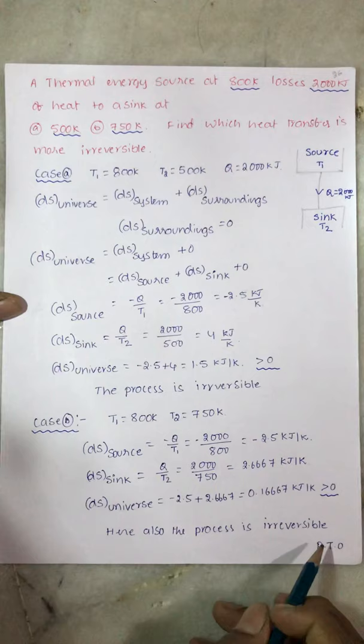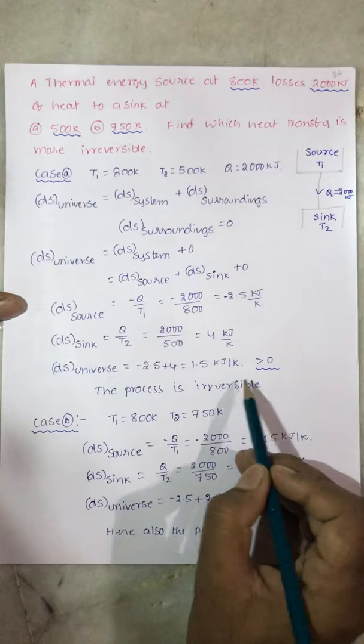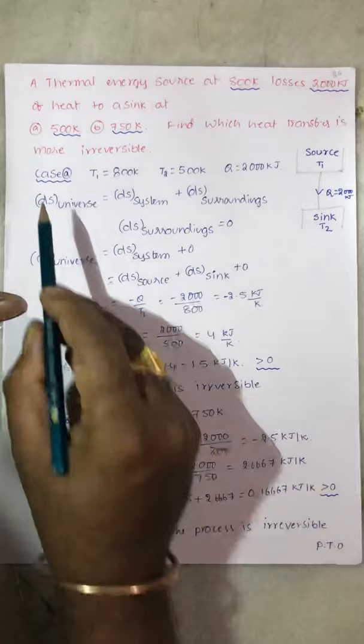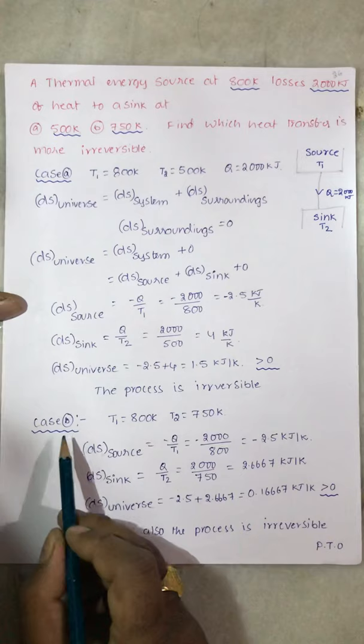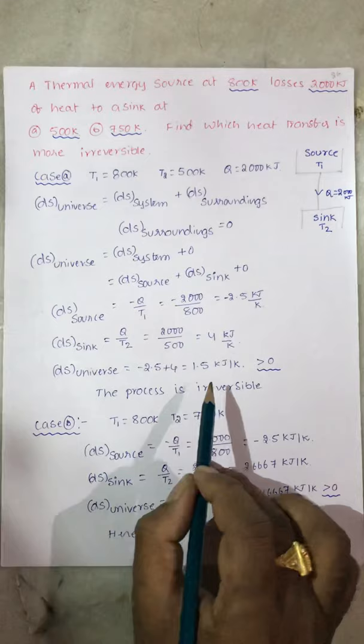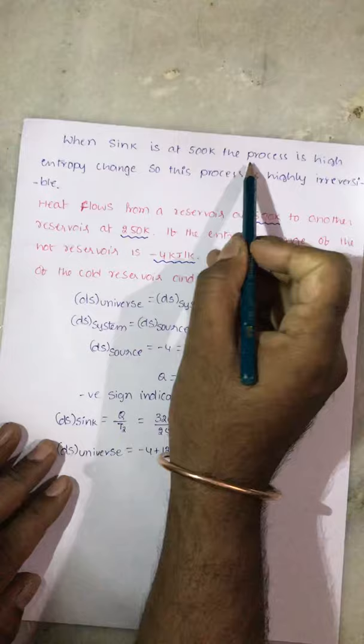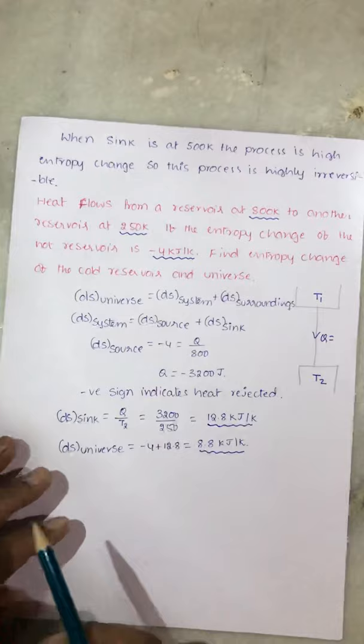Both processes are irreversible, but which is more irreversible? When the sink temperature is 500K, the change in entropy of the universe is 1.5 kJ per Kelvin. When the sink temperature is 750K, it is 0.1667 kJ per Kelvin. The greater entropy change occurs at 500K, so that process is the more irreversible — it is the highly irreversible process.